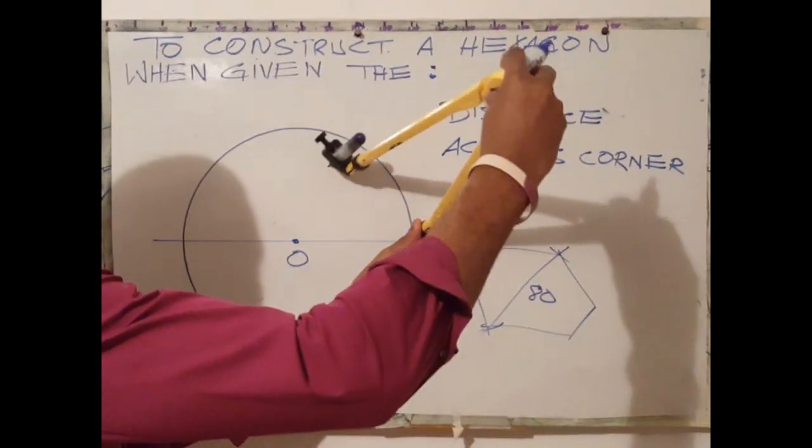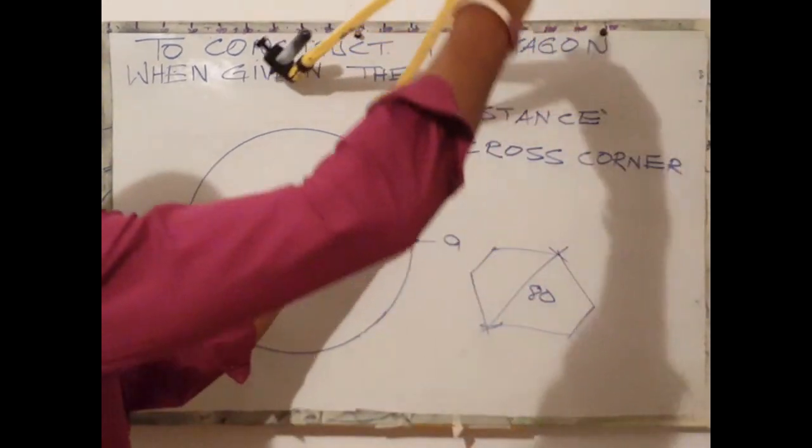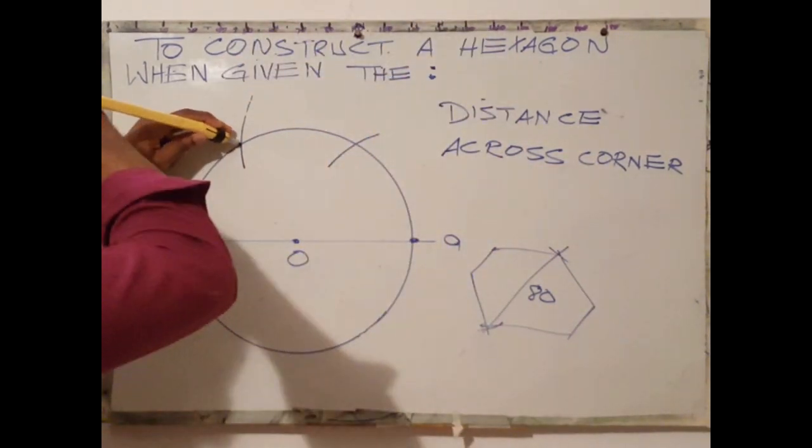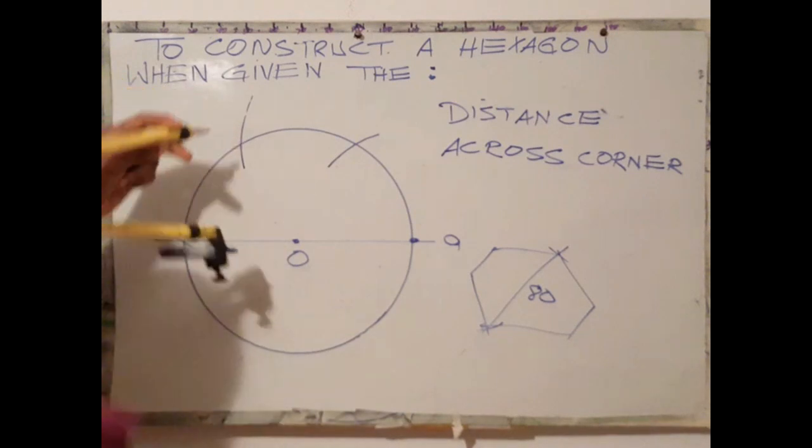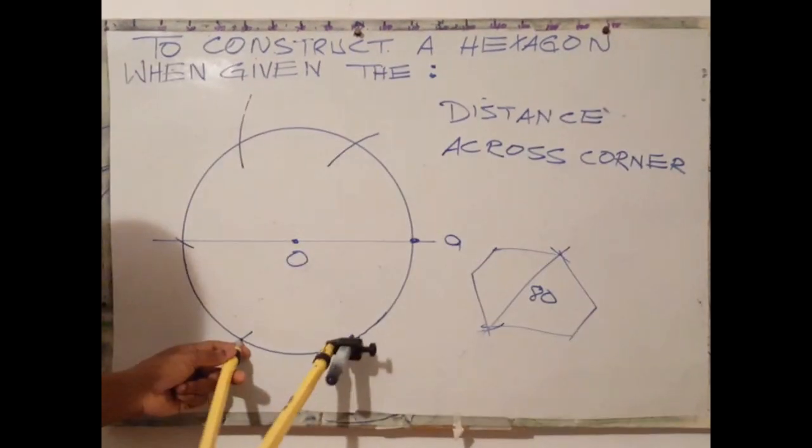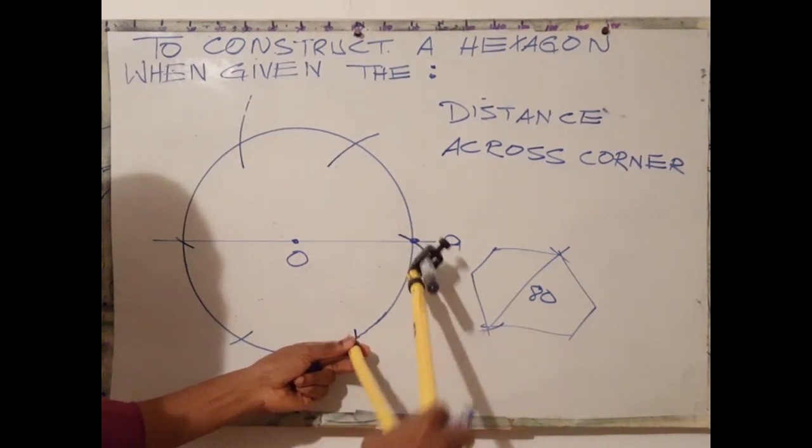Check to ensure that the radius used to draw the circle is the same. Using A as center, scribe one arc on the circumference. Progressively scribe arcs all the way around the circle using the same radius, similar to what you have done in previous examples.